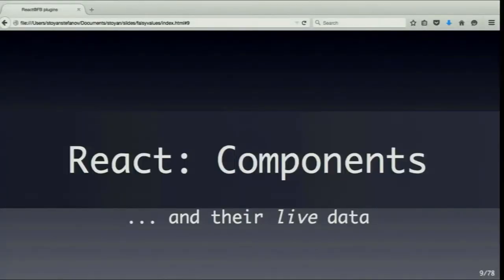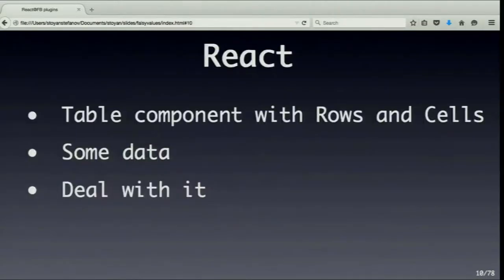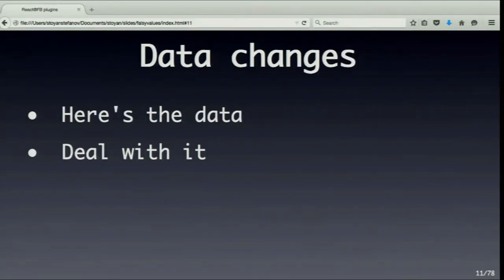React solves this by using components. It's all about components and their data. If you want to build a table with React, you say: I'll have one big table component, a bunch of row and cell components, and then I have some data. I give the data to my component and let React deal with displaying it properly — I just define the interface in those components and give it the data. And if the data changes at some point, you don't have to do anything with the UI. You don't have to touch it. Here's the new data — React, you figure it out.